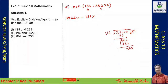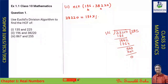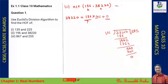Since 196 × 195 gives remainder 0, we can write the equation as 38220 = 196 × 195 + 0. Since for the very first step we get remainder equal to 0, 196 is the HCF. So the HCF of 196 and 38220 is 196.